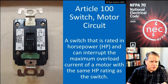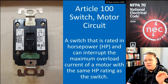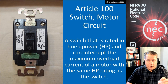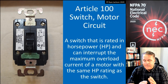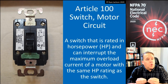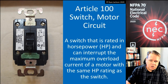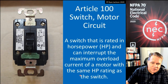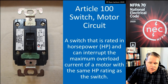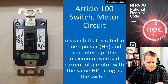We also have a motor circuit switch, which isn't quite as simple. A motor circuit switch is a switch that's rated in horsepower. Let's call time out — that's probably the most important part. If your switch does not have a horsepower rating, then it is not a motor circuit switch. This switch has a horsepower rating; it says one horsepower at 120 volts, so that is a motor circuit switch.